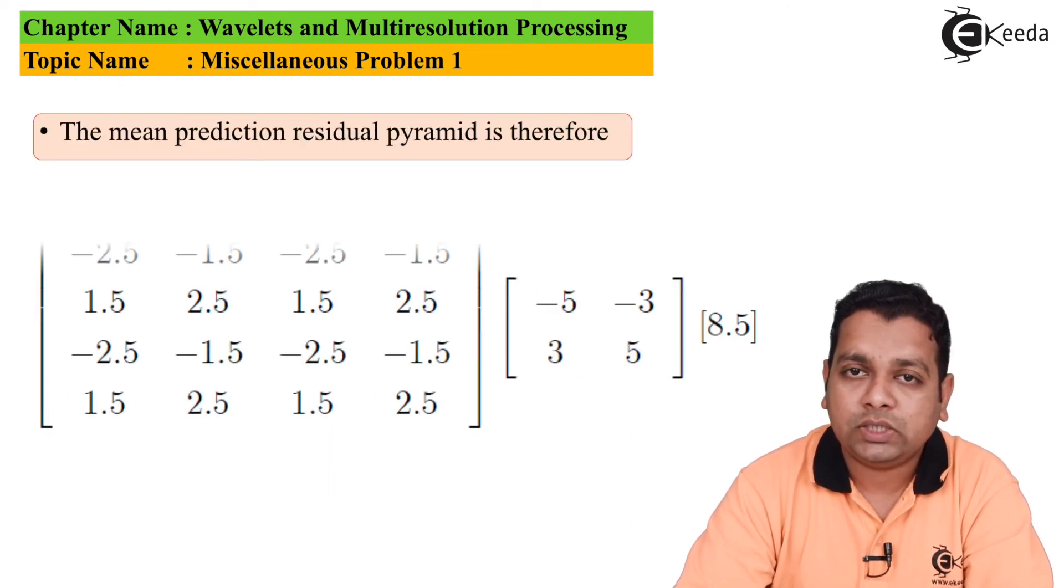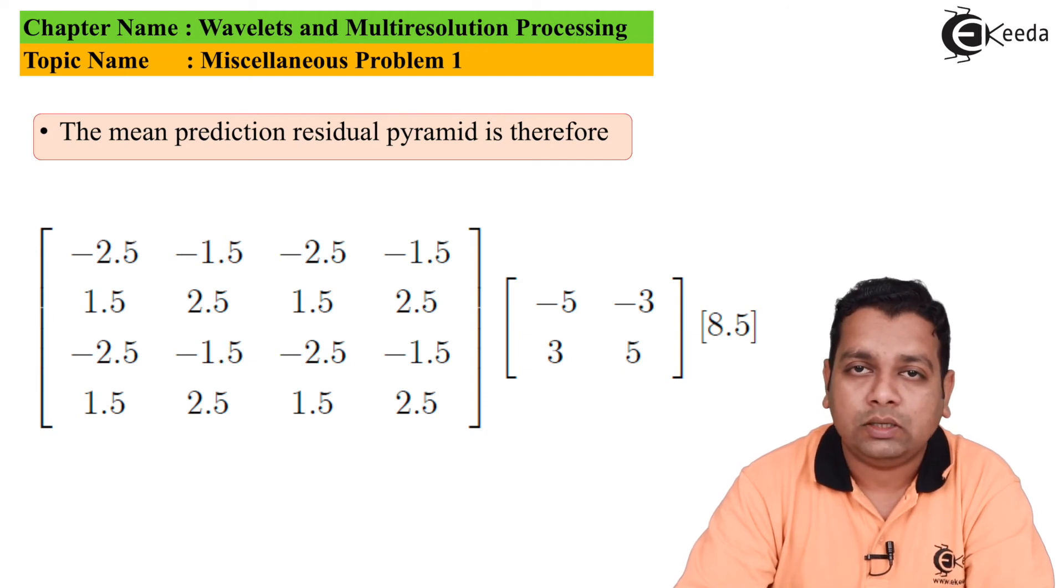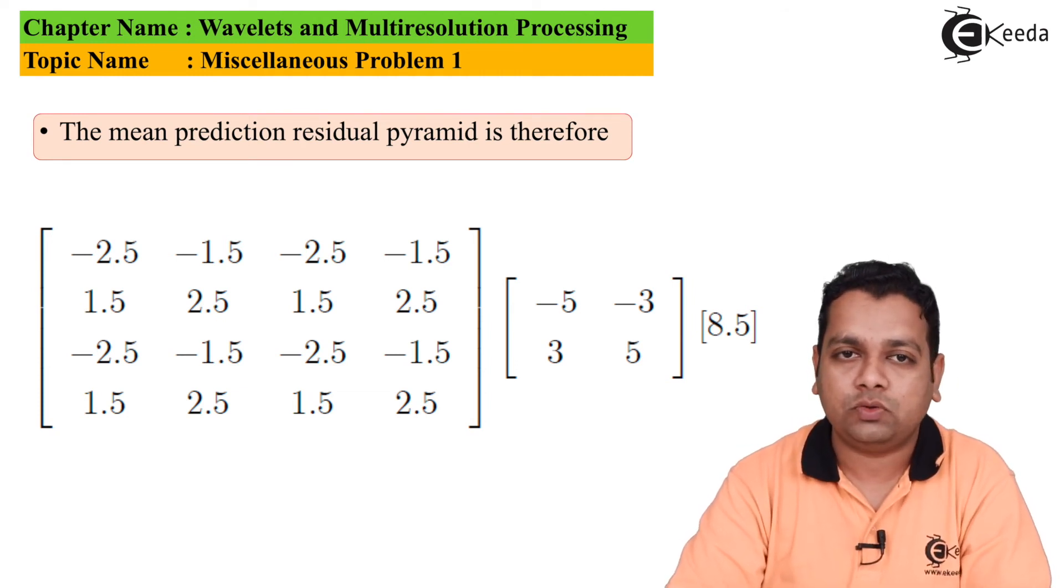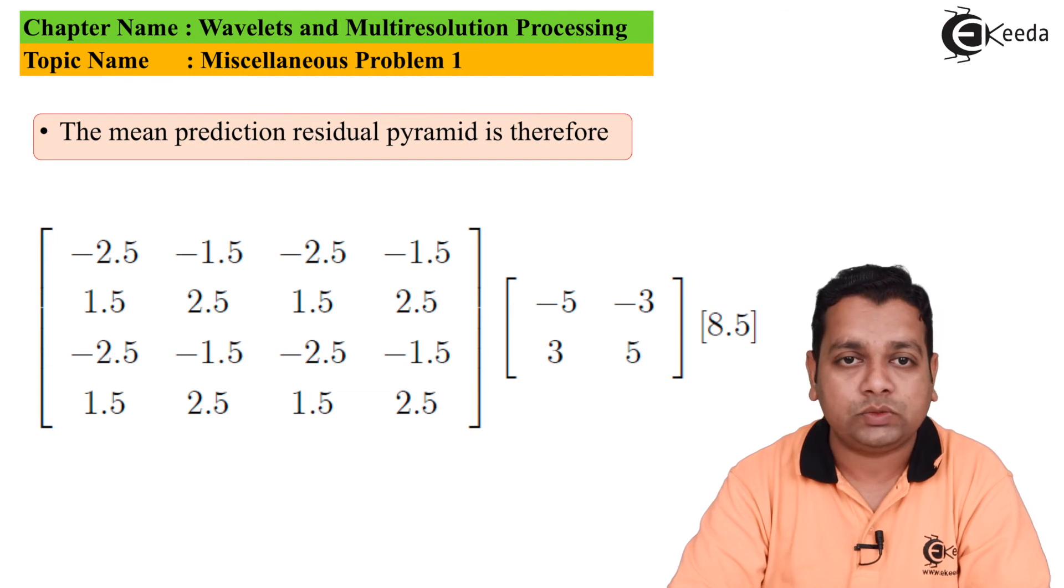The mean prediction residual pyramid is therefore written with the base of the pyramid here and the apex. The base starts with first row: -2.5, -1.5, -2.5, -1.5. Next row: 1.5, 2.5, 1.5, 2.5. Third row: -2.5, -1.5, -2.5, -1.5.